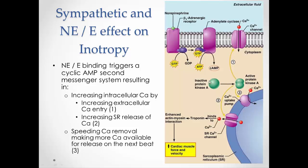The other thing that protein kinase will do is speed the calcium removal from the cytoplasm so that we get large stores of calcium in the sarcoplasmic reticulum. That way, the next beat, I get a huge dump of calcium into the cytoplasm, increasing the amount of calcium, and therefore a really big contraction at that next beat.